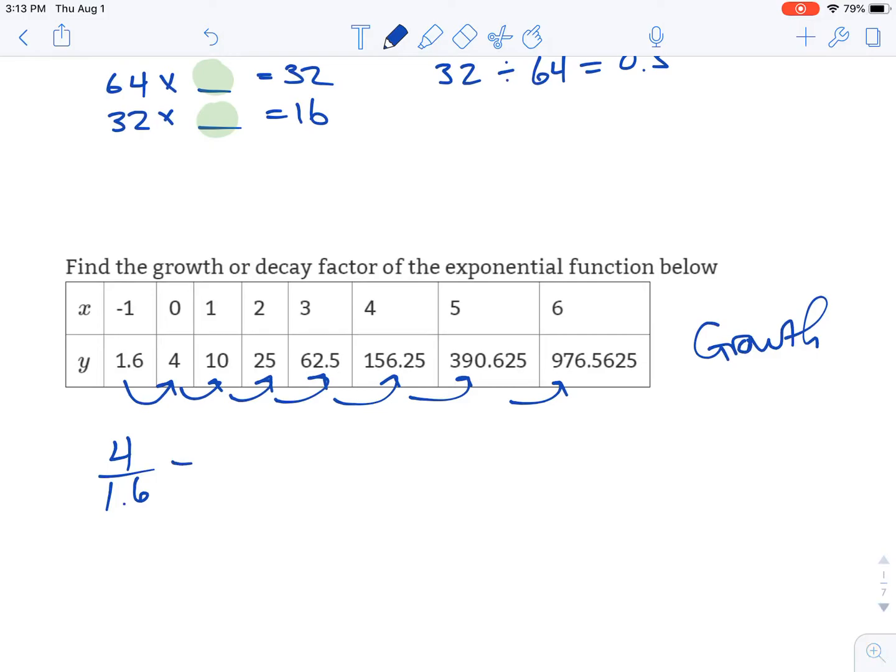So 4 divided by 1.6 would give you that growth factor, or we could do 10 divided by 4. It would be a little bit easier to do in your head. That would be 2.5. So they're all going to be 2.5.